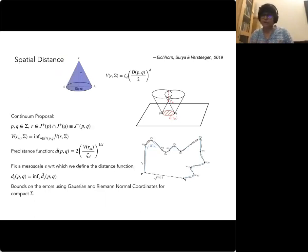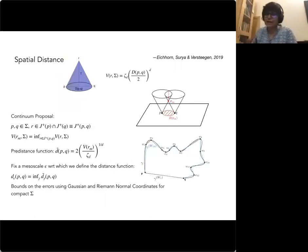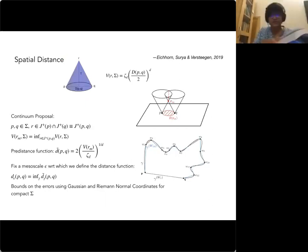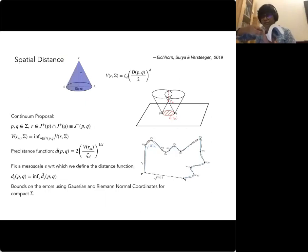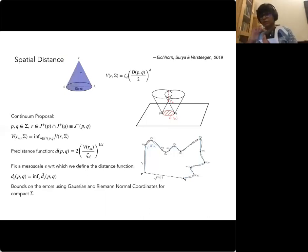Another thing we can construct from the thickened anti-chain structure is information about the homology of the hypersurface. The light cones leave impressions — like beams — on the hypersurface, and their intersections provide enough connectivity to construct a nerve simplicial complex. From that simplicial complex we can compute the homology and reconstruct the spatial topology of the spacetime from the causal set.